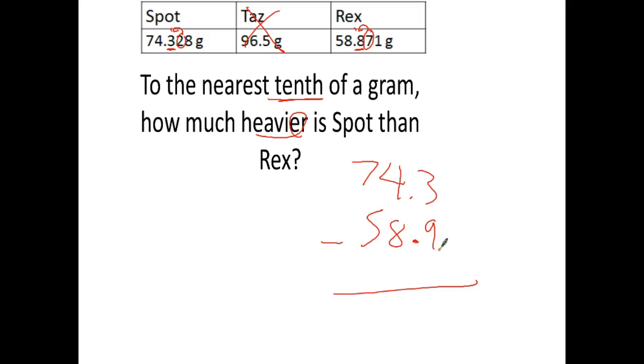Let me just subtract like normal. 3 minus 9 can't do, gotta borrow from your neighbor. 13 minus 9 is 4. 3 minus 8 can't do, gotta borrow from your neighbor. 13 minus 8 is 5. 6 minus 5 is 1. Line up the decimal points like buttons on the shirt. We're talking about grams, 15.4 grams.